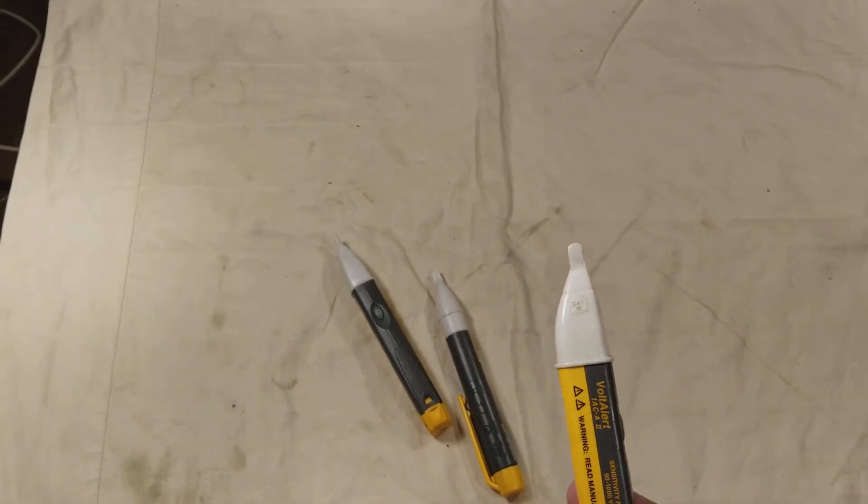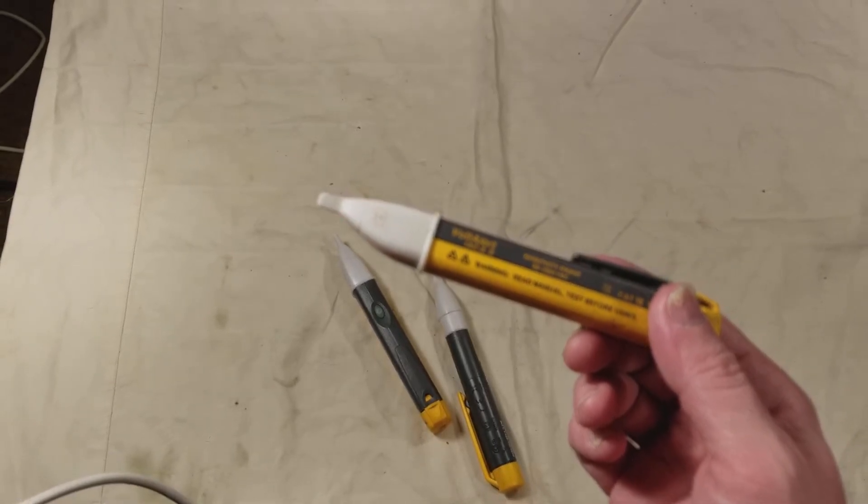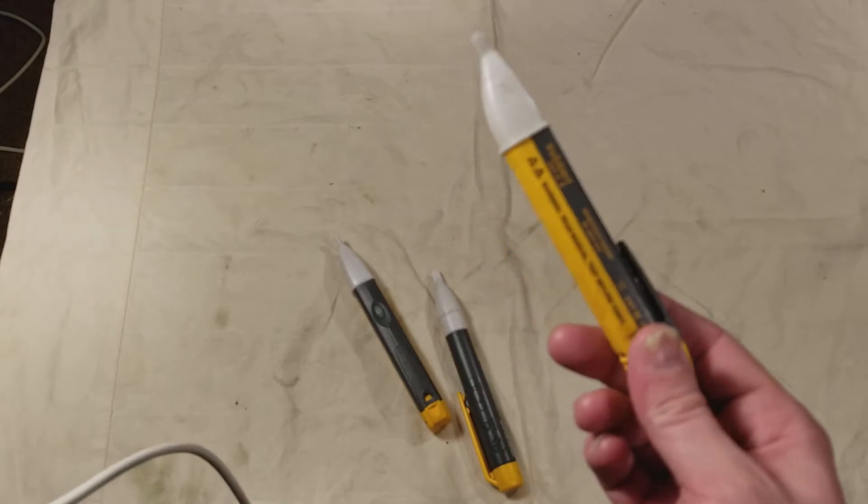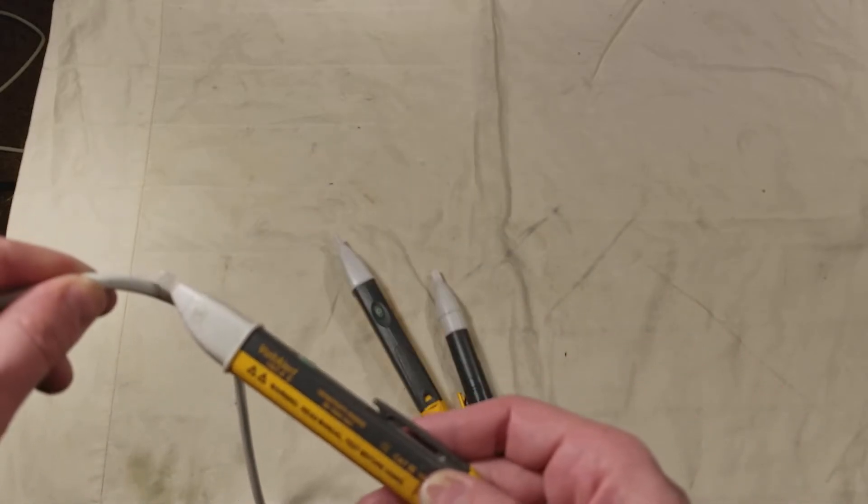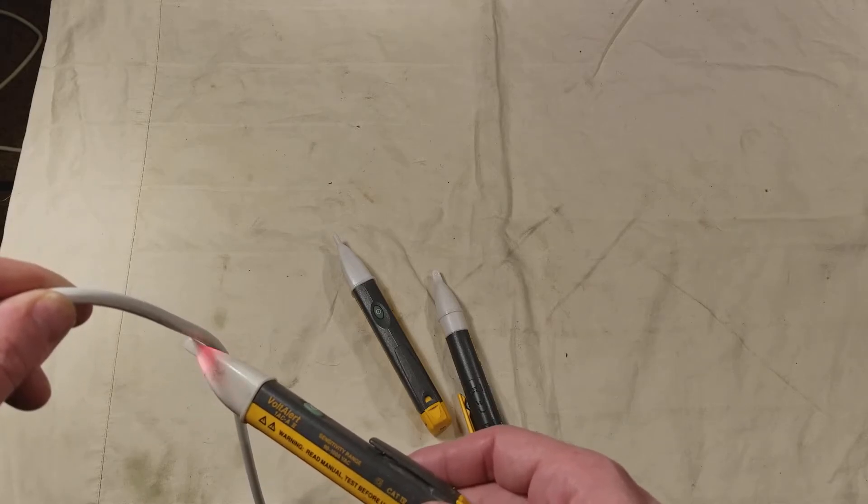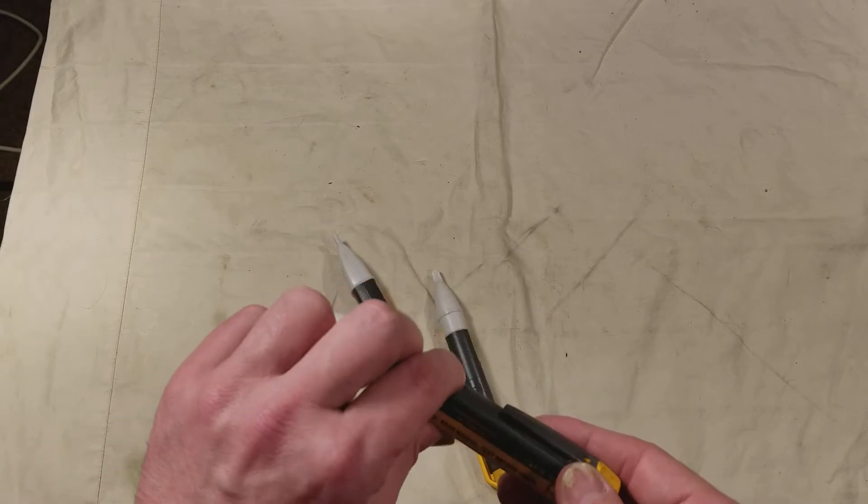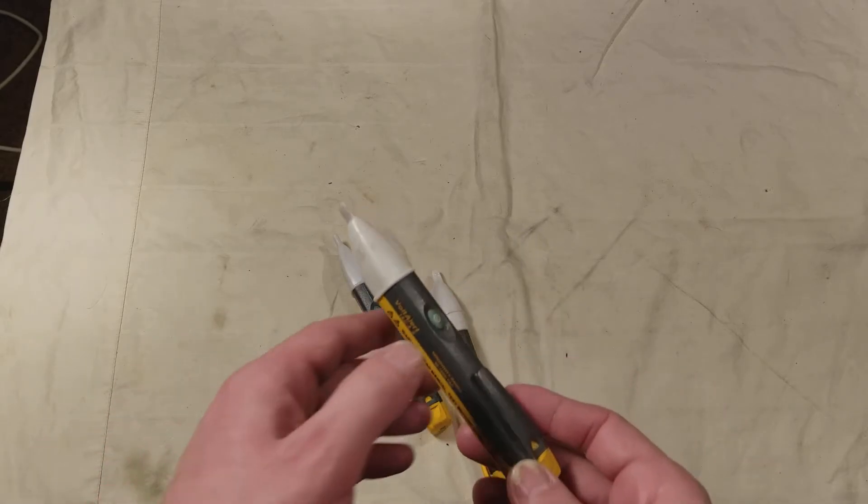We'll do a quick demonstration. These things are used to make sure the power is actually turned off. What's kind of nice is they're non-contact. You can get them near a wire, and it will beep and light up, letting you know that there's actually still voltage going through the wire.